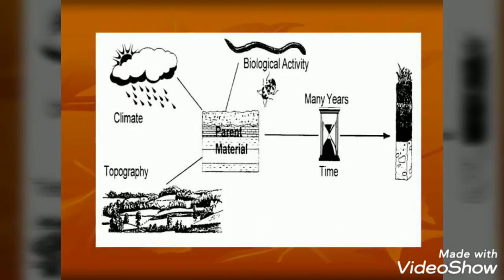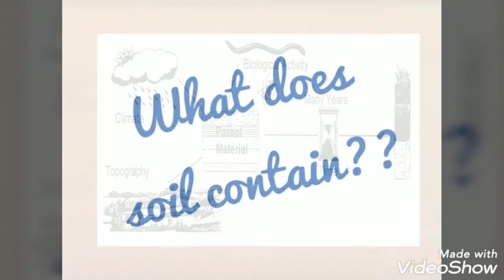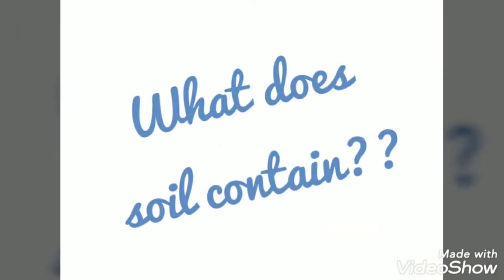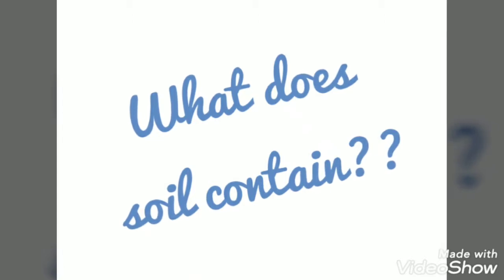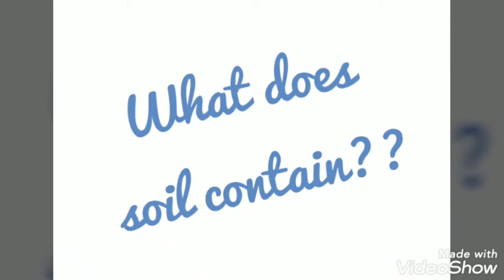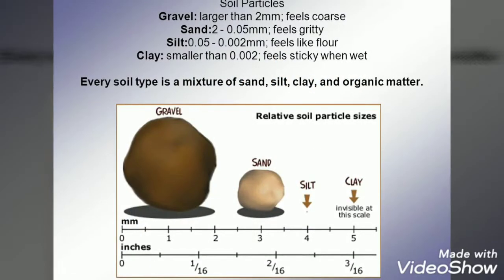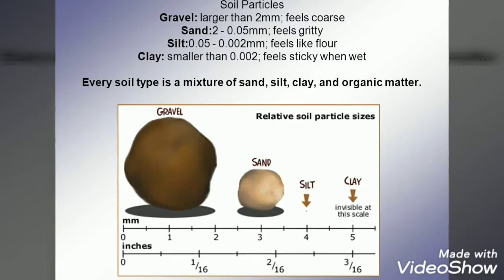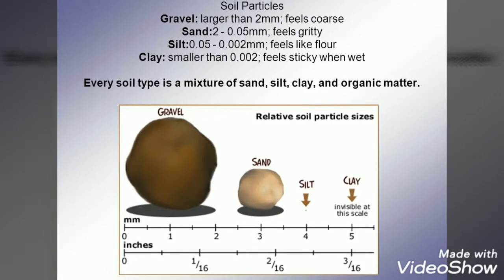Soil contains tiny bits of rock particles. Soil particles are of different sizes. Let's see the contents of the soil. First is gravel. Bigger particles of the soil which are the size of rice grains are called gravel.